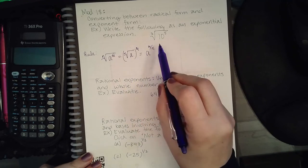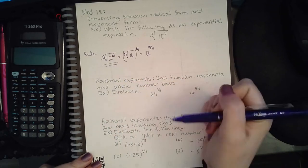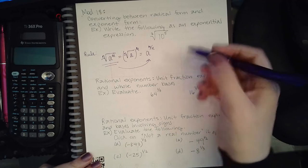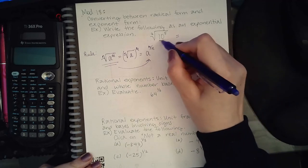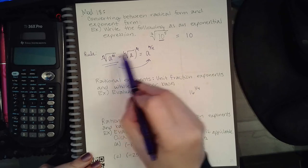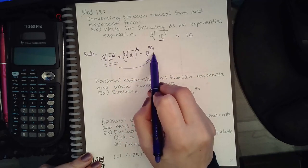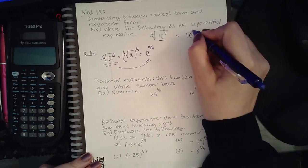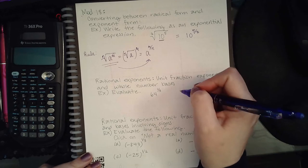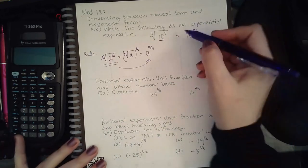We don't have parentheses in the given problem. We want to convert it to exponential form, so we keep our base, which is 10, and put the exponent in the numerator and the index of the radical in the denominator. My exponent is 5 and the index is 7. It's not asking me to compute this, just write it in the new form. That problem is complete.